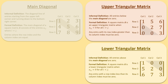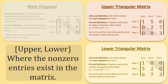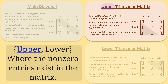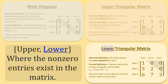The terms upper and lower refer to the location of the nonzero entries within the matrix. In an upper triangular matrix, the nonzero entries lie in the upper triangle that includes the main diagonal. In a lower triangular matrix, the nonzero entries lie in the lower triangle that includes the main diagonal.